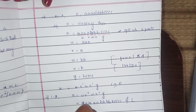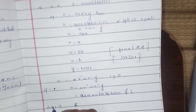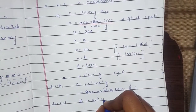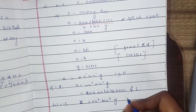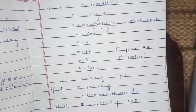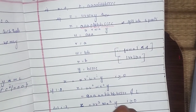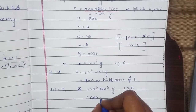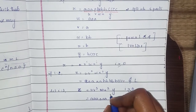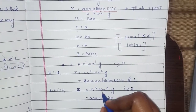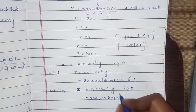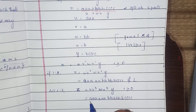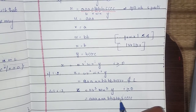Let i equal to 3 and check whether it contains the language or not. U V^3 W X^3 Y gives: U is triple A, V^3 is three A's, W is BB, X^3 is three B's, and Y is B followed by four C's. So we get 6 A's, 6 B's, and 4 C's — this also does not belong to L.